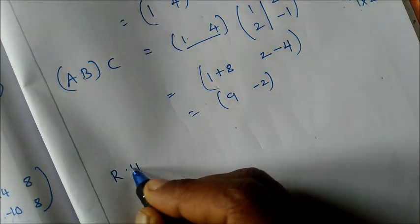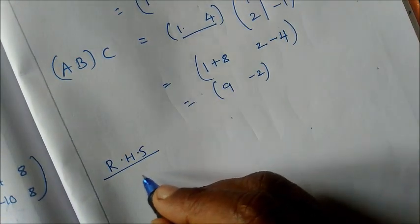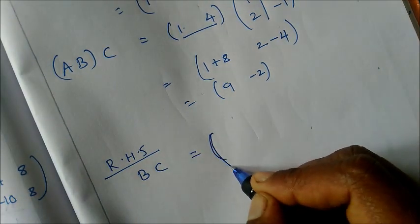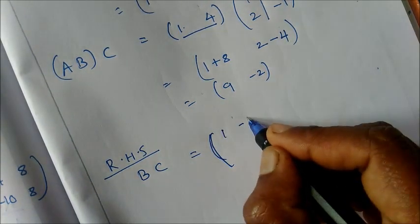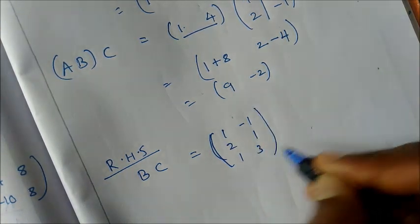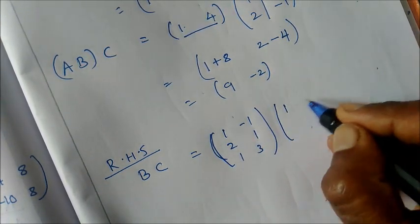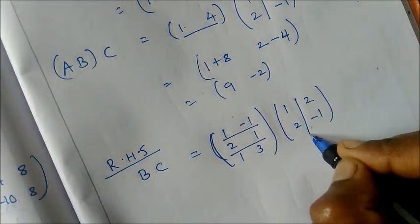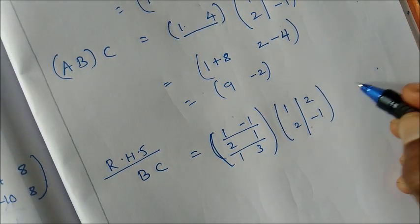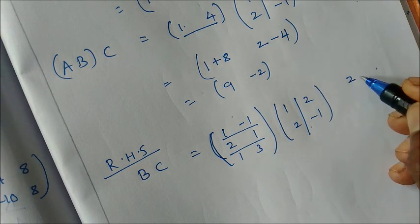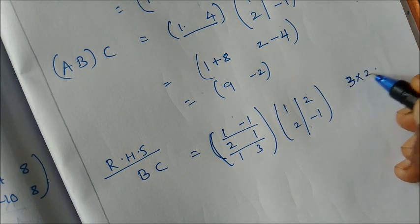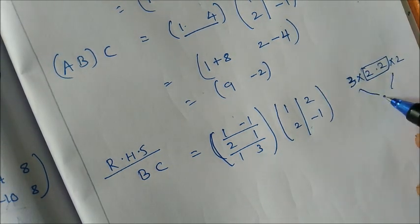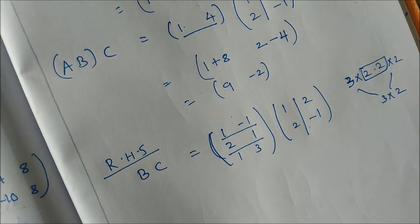Now for the right-hand side, we first compute BC. B is a 3×2 matrix [1,−1; 2,1; 1,3] and C is a 2×2 matrix [1,2; 2,−1]. Check order: B has 2 columns and C has 2 rows — same, so multiplication is possible. The resulting matrix will be 3×2.